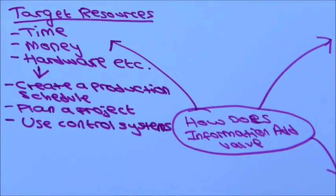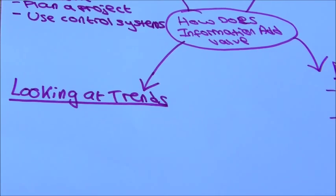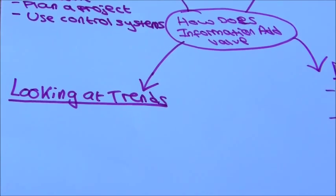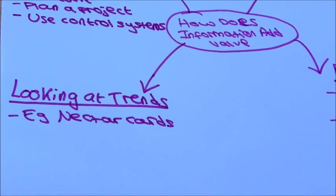Control systems could be used to ensure that stock is always available. Information can also be used to look at trends. For example, an edit card tracks what an individual has bought so that the company can target them with certain deals related to what the individual has bought.